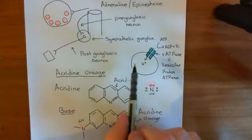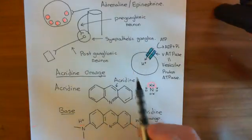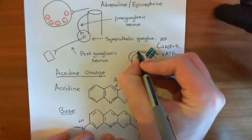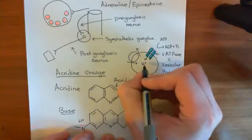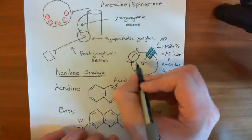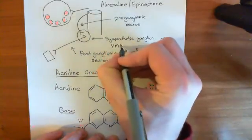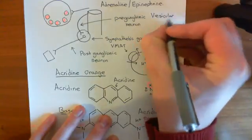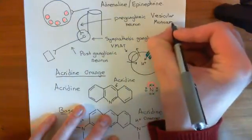That gives you a very high concentration of protons in this synaptic vesicle. The reason the synaptic vesicle needs this high concentration of protons is that it then has secondary active transport proteins, which allow protons to leave the vesicle down their concentration gradient in exchange for a neurotransmitter molecule — in this case, adrenaline slash epinephrine — being moved into the synaptic vesicle.